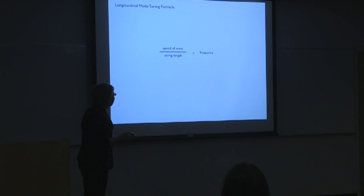The method of tuning a string which is played in longitudinal mode is taking the speed of the wave divided by the length to find the frequency, or vice versa. Speed of the wave divided by the frequency will give the string length at which you'll get that tone. That's how I have a spreadsheet and work out my tuning system.